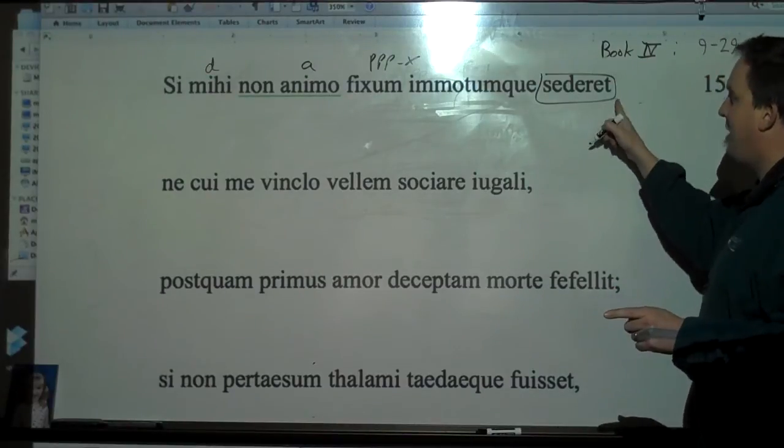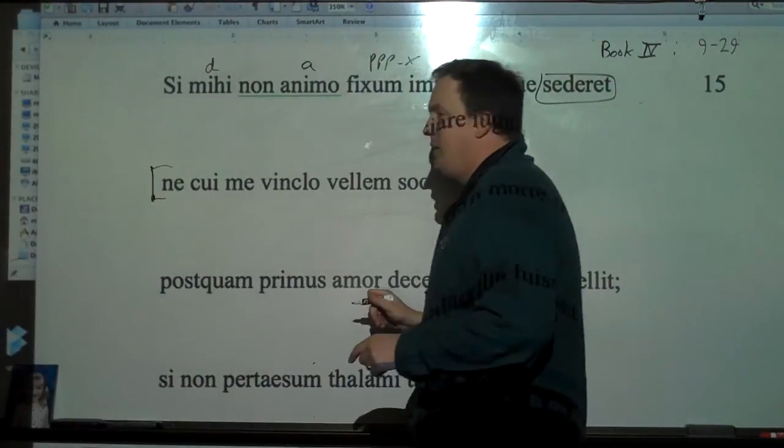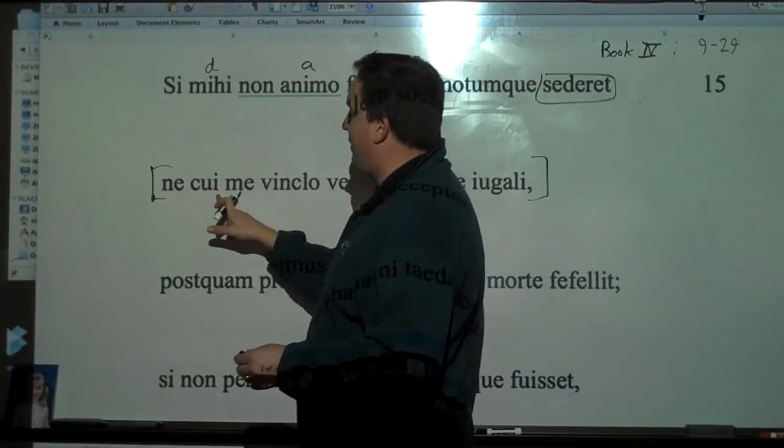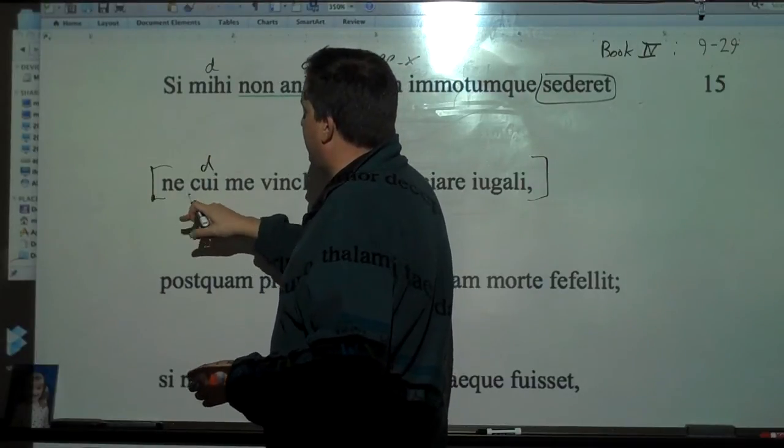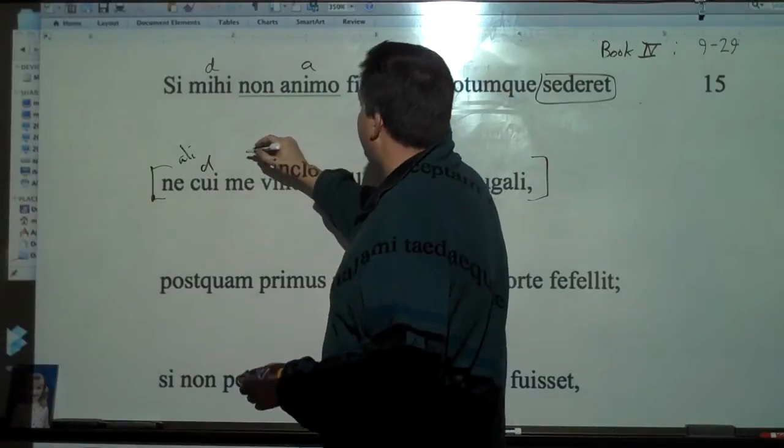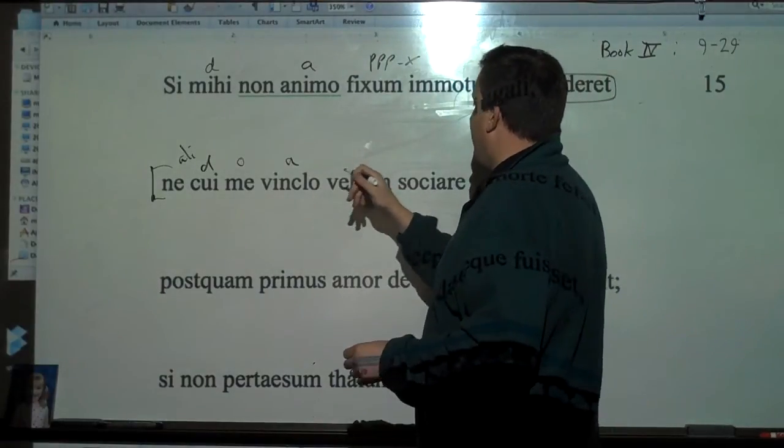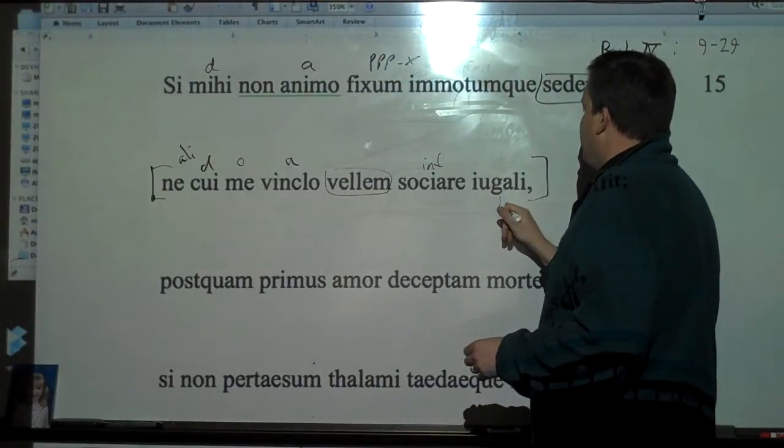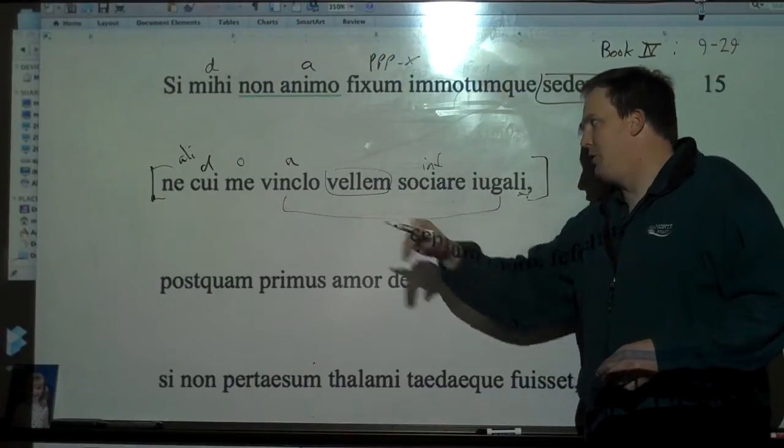It's going crazy. Now, the question, of course, is what's the subject of sederet? The subject of sederet is all this right here. Ne cui me vinclo vellem sociare iugali. Okay, which is really crazy. Now, we'll kind of keep figuring out the cases here. Cui is from alicui because it's after ne, and the ali has dropped out. Me, that should be accusative there. Okay, vinclo, nice ablative. Vellem, imperfect subjunctive going with the ne clause. Sociare, nice infinitive. And then iugali is going, is an adjective going with vinclo. Look at the i there. It's third declension adjective. It's in an i. So it's going right there with the ablative.